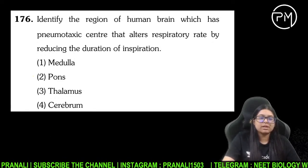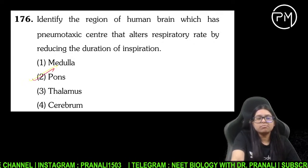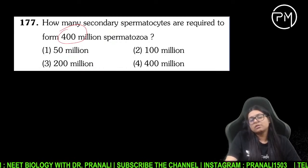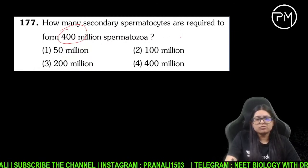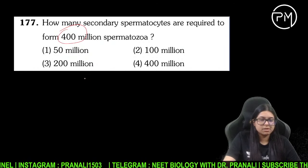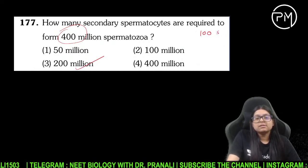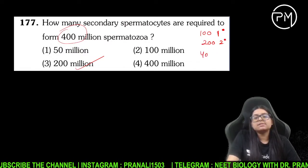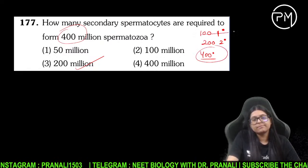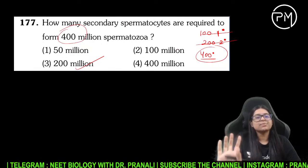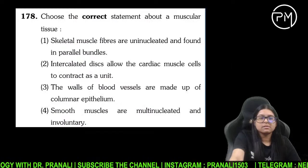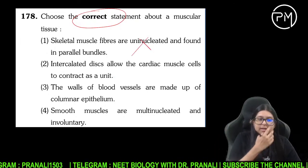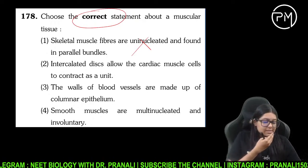Pneumotaxic center kahan pe hota hai? Pons region mein hota hai — yeh toh very common. How many secondary spermatocytes are required to form 400 million spermatids? Secondary pooch raha hai — 200 million secondary spermatocytes chahiye rahe. Primary spermatocyte 100 million, secondary spermatocyte 200 million jisse ban jaayenge 400 million sperm.